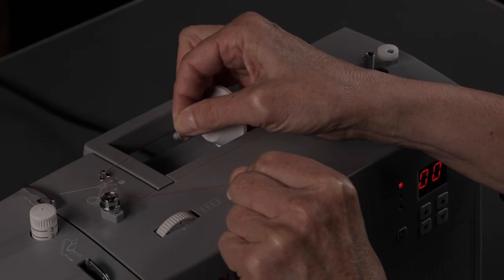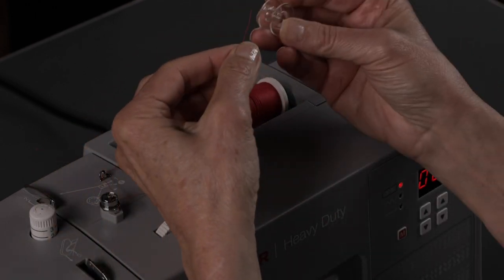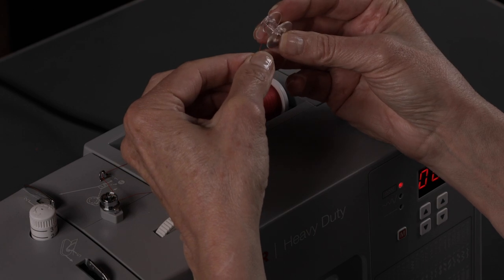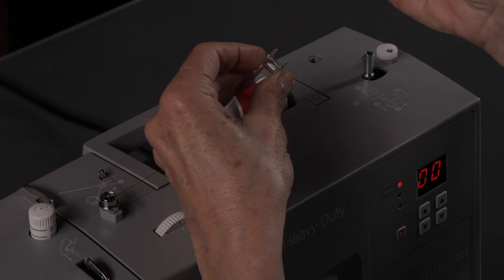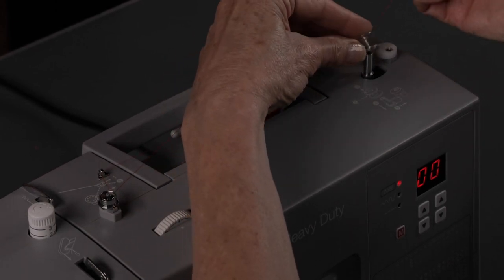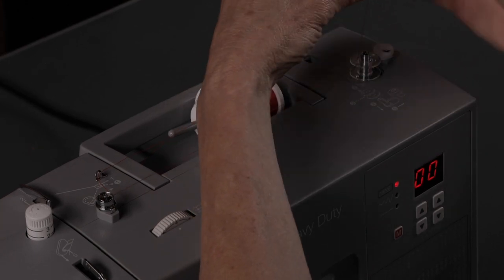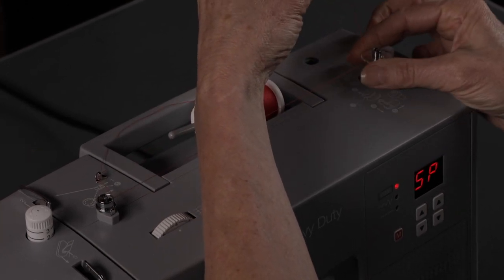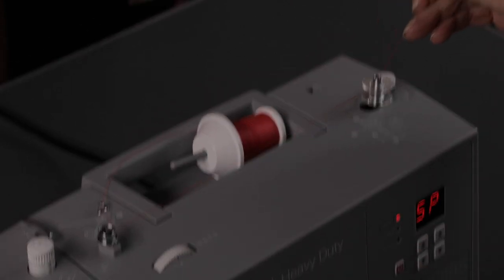It's really important or your bobbin won't wind properly. Take the end of your thread and place it from center out through one of these holes on the bobbin, then set your bobbin on the bobbin winding spindle and push it down. Hold the thread and push the whole thing over to the right. Now you can step on the foot control to start winding.